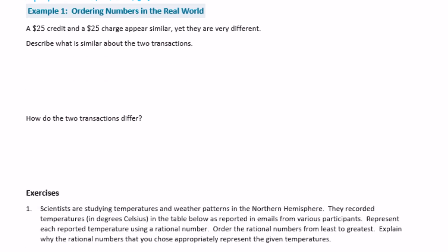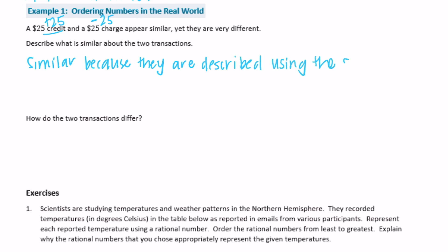Example 1: a $25 credit and a $25 charge appear similar, yet they are different. Describe what is similar about the two transactions. A credit means you've gained $25, and a charge means you're losing $25. They appear similar because they both use the same number — both are talking about $25. Also, $25 and negative $25 have the same absolute value.